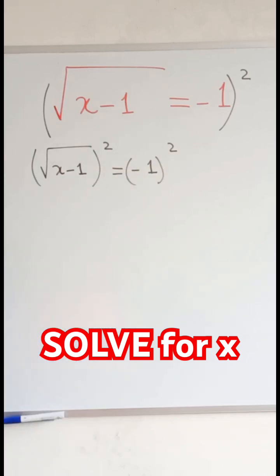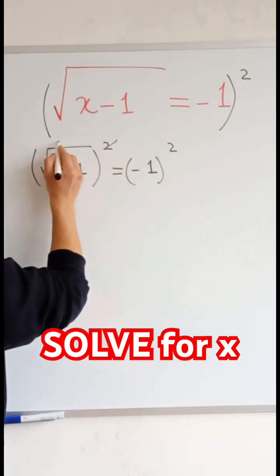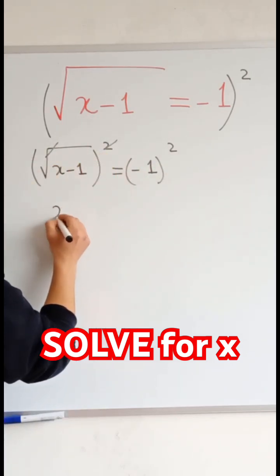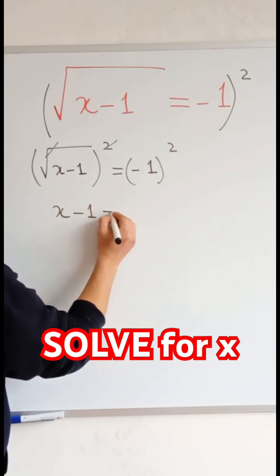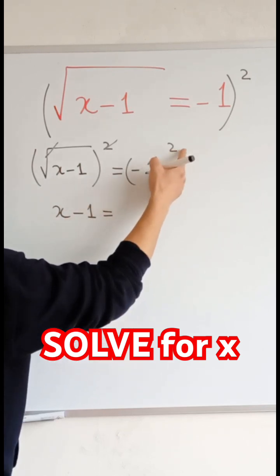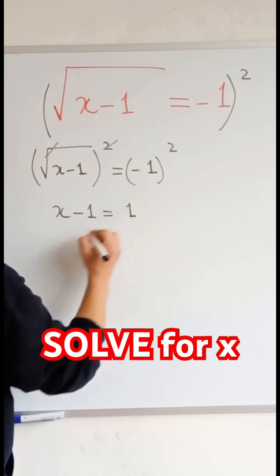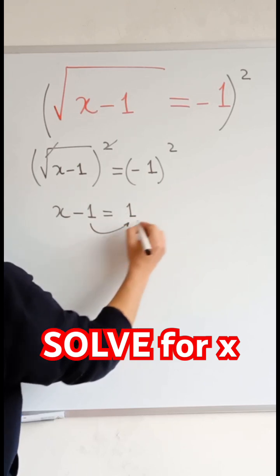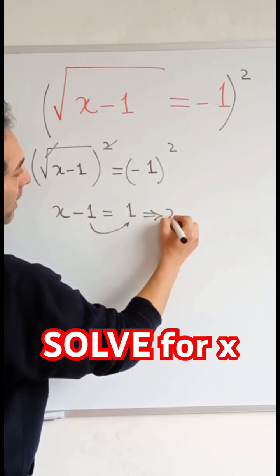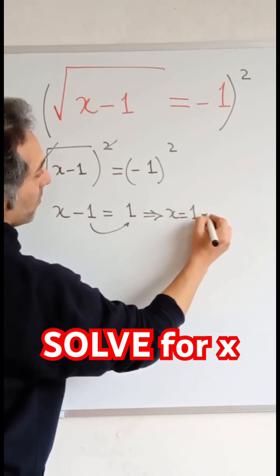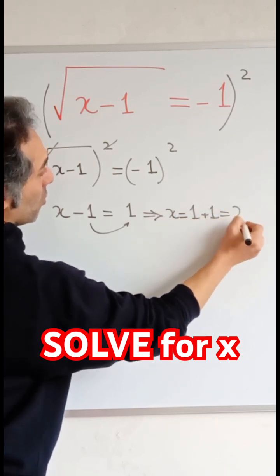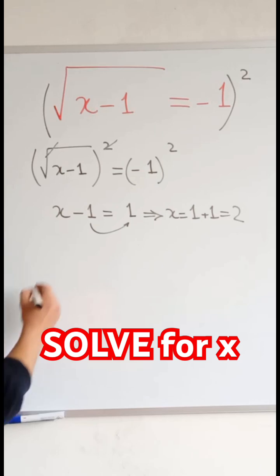These two simplify with the radical, so x minus 1 equals minus 1 squared, which is 1. Taking this minus 1 and flipping the sign, x equals 1 plus 1 equals 2. Okay, let's check.